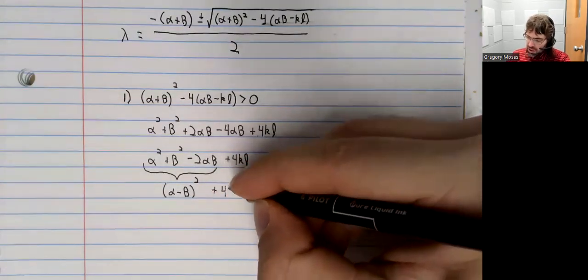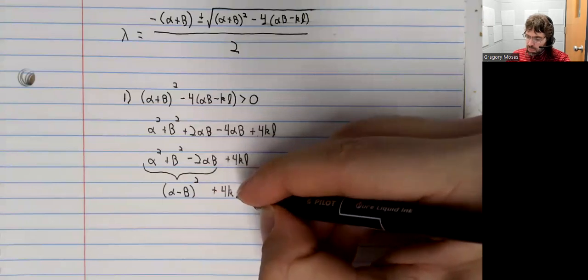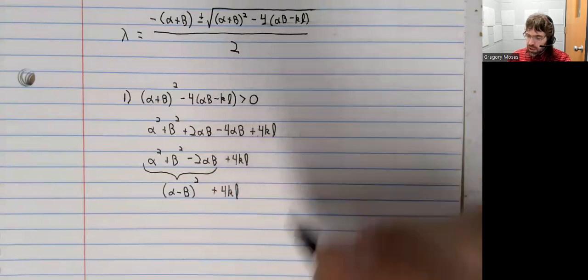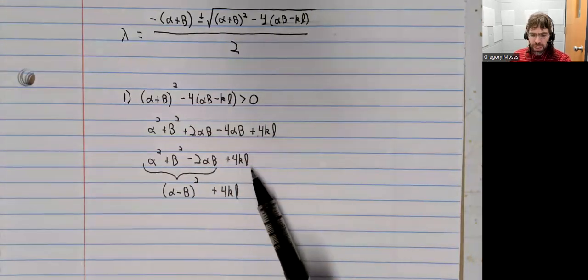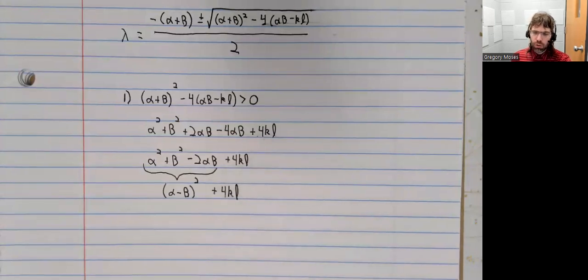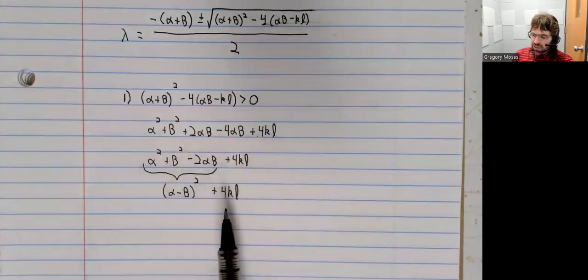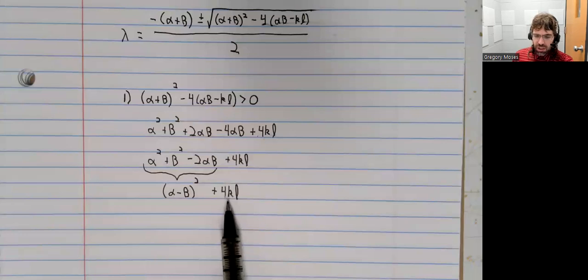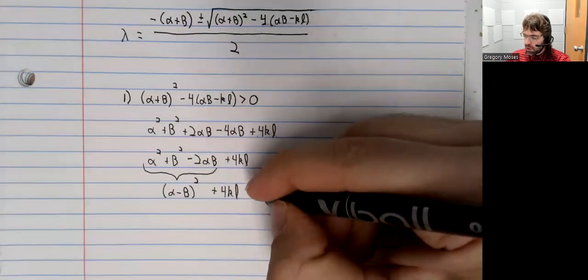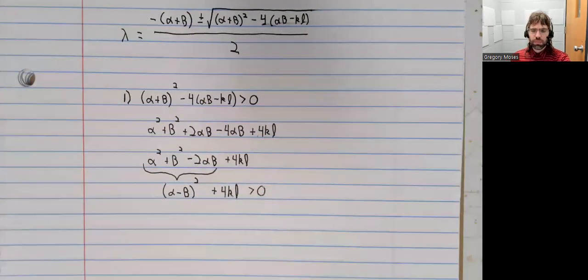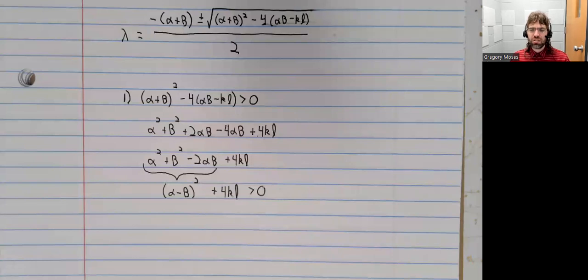So this is non-negative. This is strictly positive. Neither K nor L is zero. So if you have something greater than zero plus something that can't be negative, the result is greater than zero.